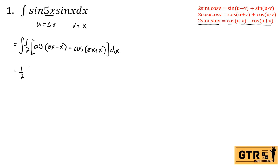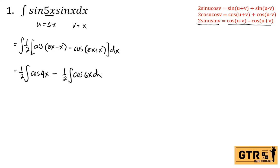We move the constant one half across the integral sign and distribute dx. So we have one half integral of cosine(5x−x), which equals cosine(4x), minus one half integral of cosine(5x+x), which equals cosine(6x) dx.